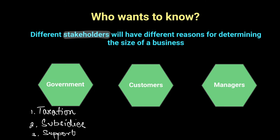The bigger the business, the more tax the government is able to collect, so they want to figure out who is the biggest to charge an appropriate amount of tax. Similarly, they want to know which are the smaller businesses, because smaller businesses require subsidies and support in the form of financial grants — especially those dedicated to small and medium enterprises. Businesses that are beneficial to the overall economy are ones the government would like to support with financial advice, technical advice, and any other support they might need.